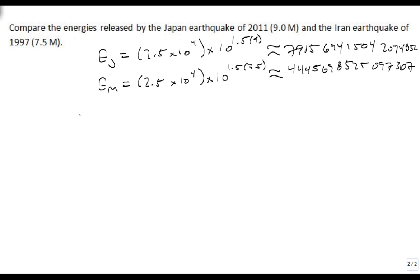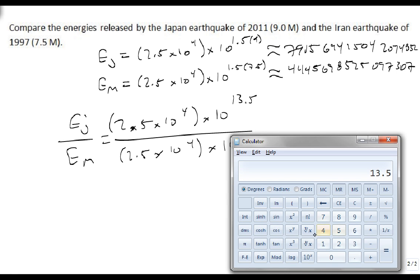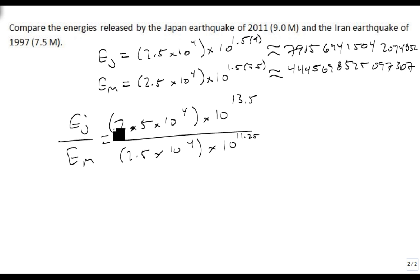But what I really want is a comparison. What is EJ over EM? Well, there's some good news here: 2.5 times 10 to the 4 times 10 to the 13.5 divided by 2.5 times 10 to the 4 times 10 to the 11.25. Notice that there's something nice that those will divide out, so I don't need to actually divide these numbers, which is equal to 10 to the 13.5 over 10 to the 11.25, 10 to the 2.25.